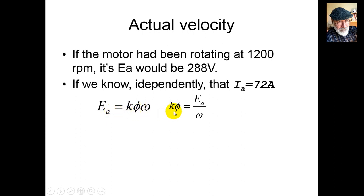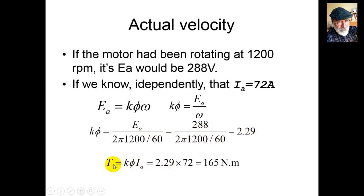Ea equals Kφ times omega. We solve for Kφ as induced voltage divided by omega. In our case, 288 volts divided by omega at 1200 RPM converted to radians per second: 1200 × 2π / 60. We get Kφ = 2.29. Then the induced torque is Kφ times Ia, which equals 2.29 × 72 amps = 165 Newton-meters.